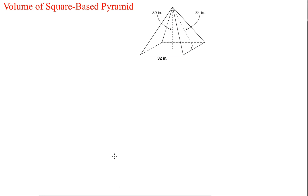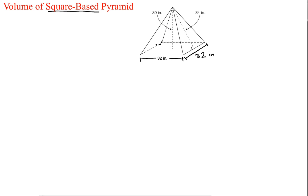Let's take a look at square-based pyramids, and we're going to find the volume of this pyramid. This whole idea of a pyramid being square-based basically tells us that the base of the pyramid is a square, so that segment right there is also 32 inches. This is 32 inches. This is 32 inches.